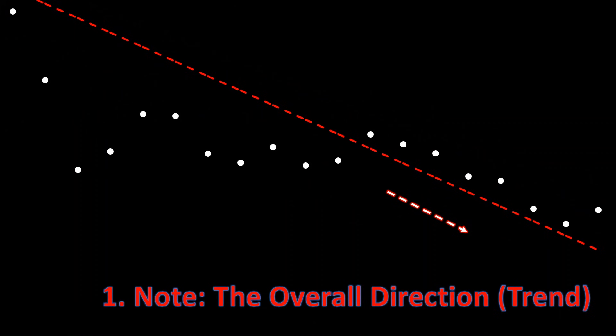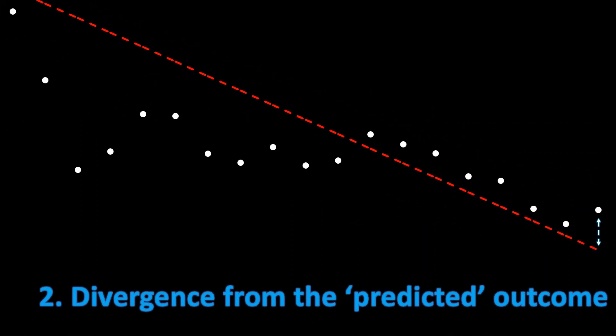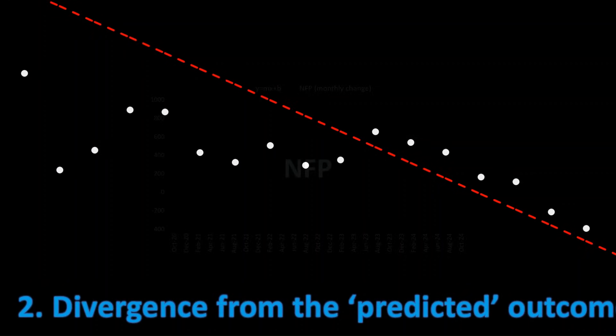The benefit of this formula is: number one, we're able to identify the overall trend — in this case to the downside. Number two, we can spot the divergence from the predicted outcome. It takes all the data on the screen and predicts where the next number is likely to be. The last CPI report was a little bit hot — a little higher than expected and also higher than what the linear regression formula predicted.